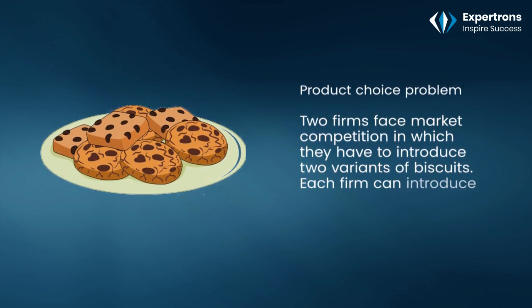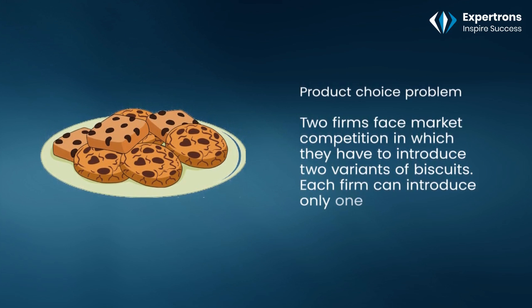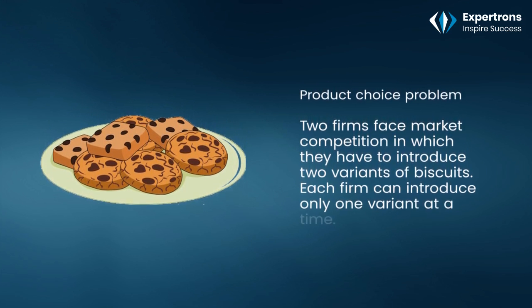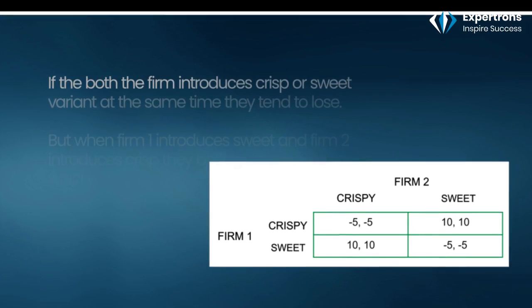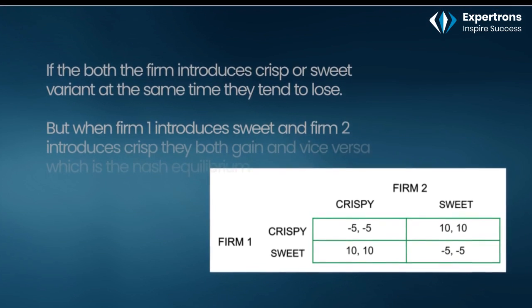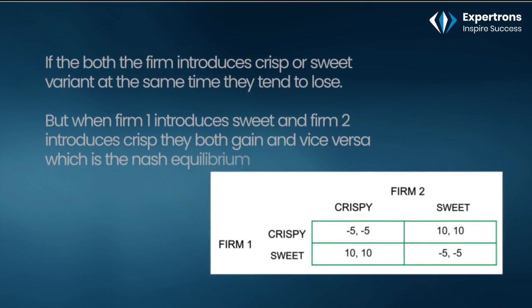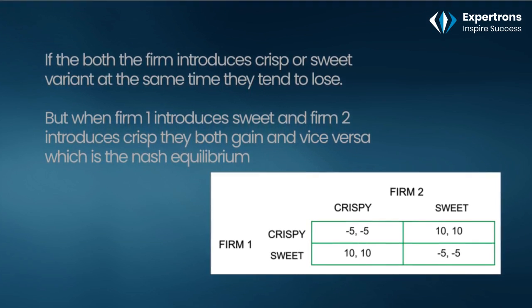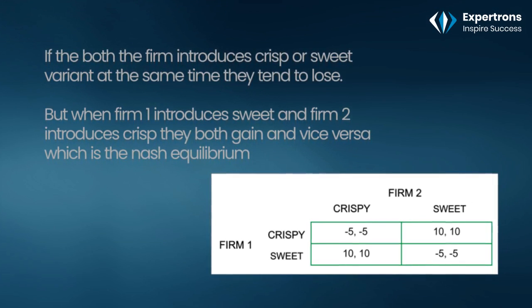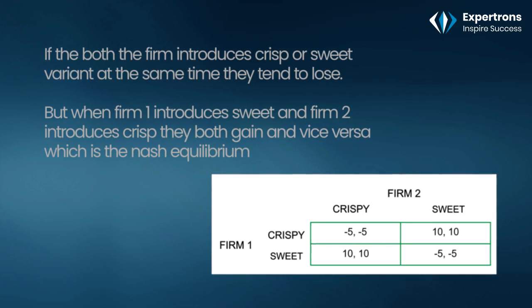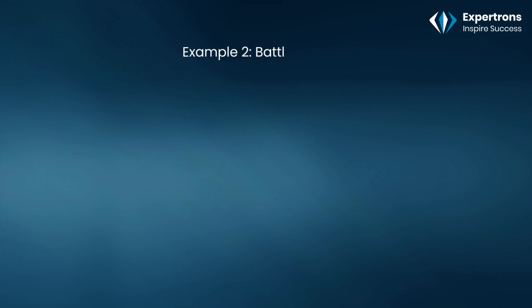Each firm can introduce only one variant at a time. If both firms introduce the crisp or sweet variant at the same time, they both lose. But when firm one introduces the sweet variant and firm two introduces the crisp variant, they both gain, and vice versa. This outcome is the Nash equilibrium.